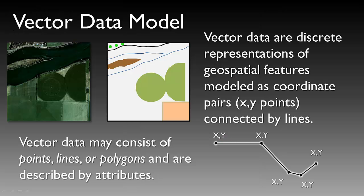To discuss specifics about these data models: vector data models are discrete representations of geospatial features, modeled as coordinate pairs of XY points connected by lines. Vector data really consists of points, lines, or polygons — those are the three types of vector data available in a GIS.